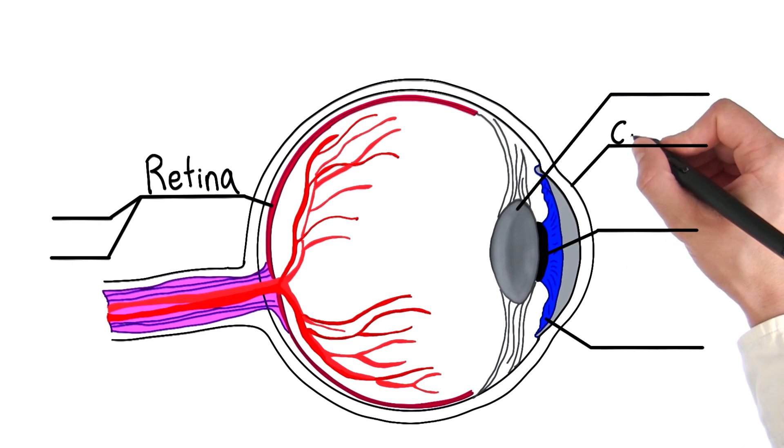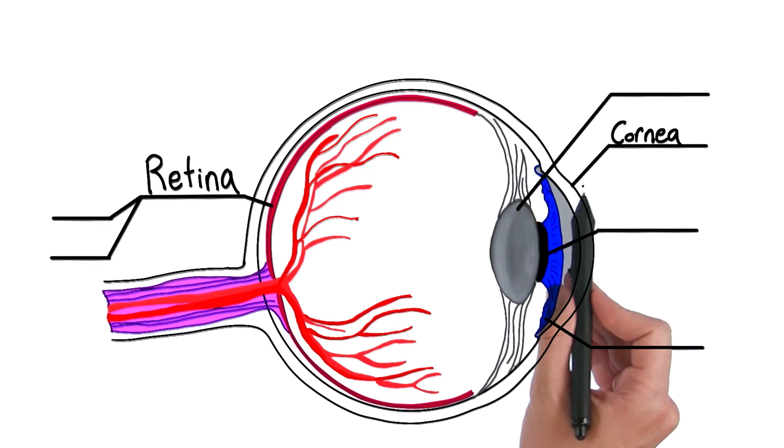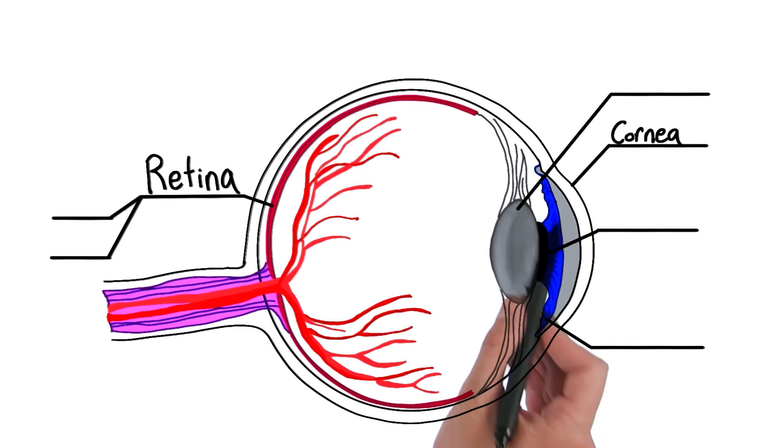Right here, we have this clear protective membrane, and that's called the cornea. And the eye is pretty important, so its job is basically just to protect everything that's going on inside.